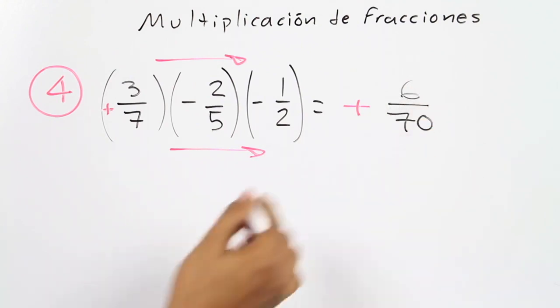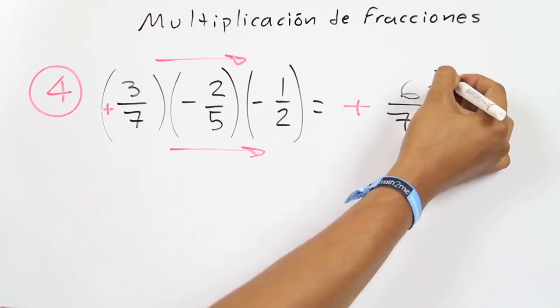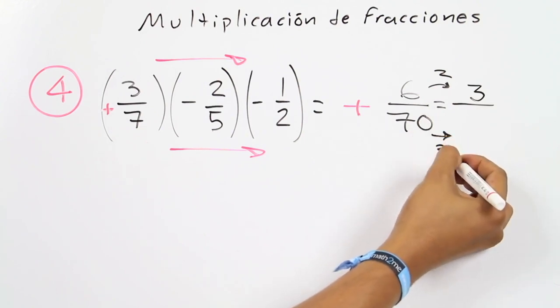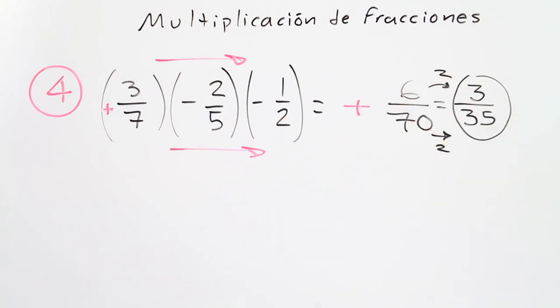But both numbers are even, which means that they can be divided by 2. 6 over 2 equals 3, and 70 over 2 equals 35. And now we get the simplified fraction of our multiplication.